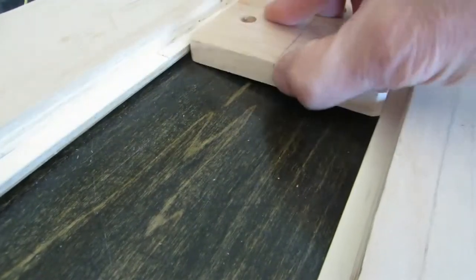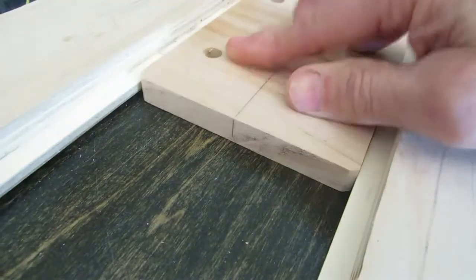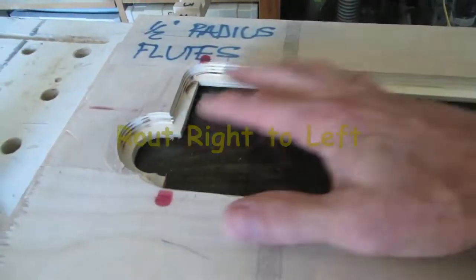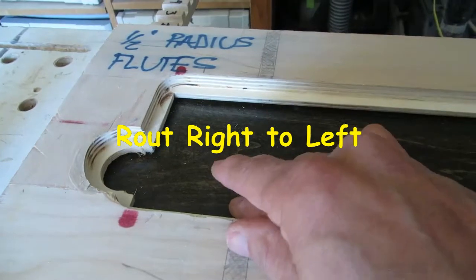Since it's riding on the piece of wood that's getting routed, you'll always have a uniform depth of flute. This wall will stop the router to where that is the stop point of the flute.